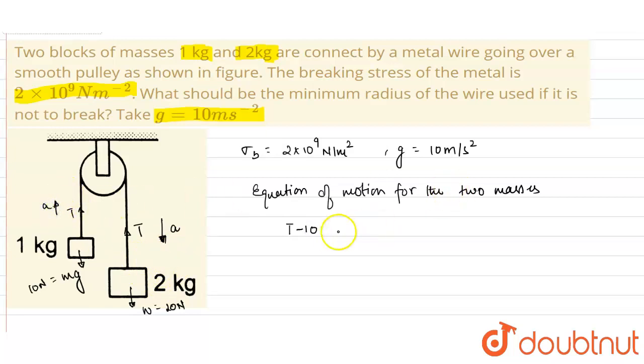For the block of 2 kg, it will be 20 minus T, that is the net force, equals to mass into acceleration, which is 2a. This is equation number 2.